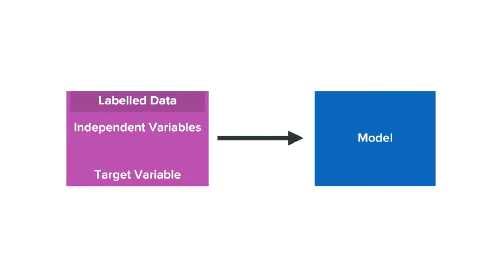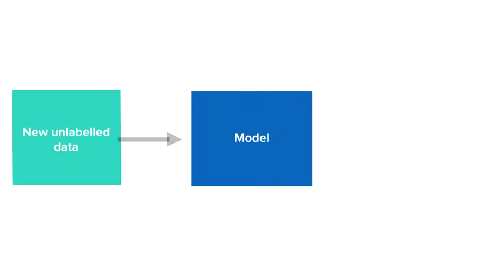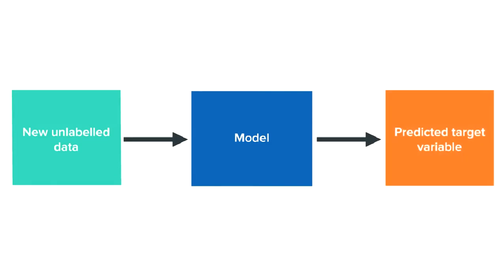From the term supervised learning, we can infer that a supervised learning model is a model which learns under supervision, and this supervision is provided by the labeled data which contains a target variable and a few independent variables. In a supervised learning model, we are more interested in the target value. Just like a student learns from a teacher and then delivers in the exam, in supervised learning the model first learns about the target variable and how it depends on the rest of the information using the past labeled data. This is referred to as training the model. Once the model has been trained, we can feed new unlabeled data to it for predictions.